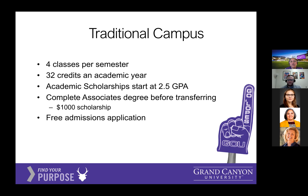For the traditional campus you'll take four classes per semester — 32 credits per academic year. Our academic scholarships start at a 2.5 GPA and are automatic based on your transcript. When you complete your associate's degree there is an additional $1,000 scholarship. We want all students to complete that associate's degree — it's a win-win, especially since your classes at Pima cost less. Our admissions application is also free.